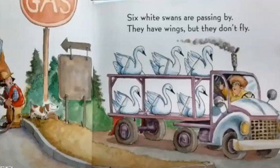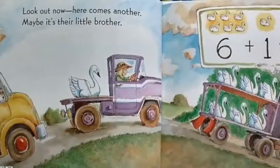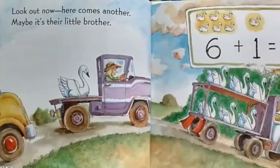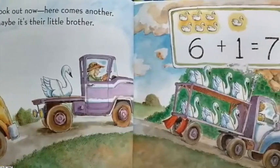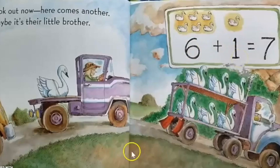Six white swans are passing by. They have wings, but they don't fly. So here we have six swans. Look out now! Here comes another. Maybe it's their little brother. So we have six swans plus one more swan. Six plus one equals seven.